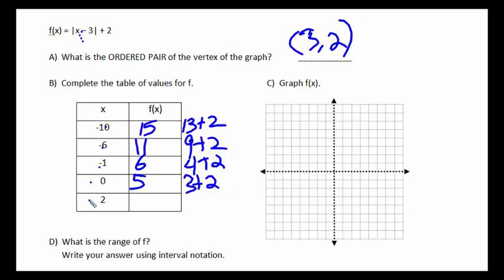And plugging in 2 gives you negative 1 inside the absolute value, which is a positive 1 on the outside, plus 2 more, which gives you 3. And if you plot these points,